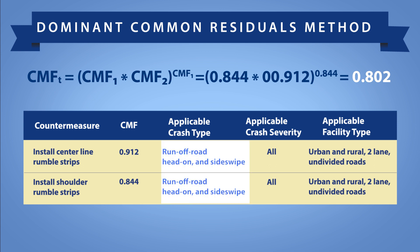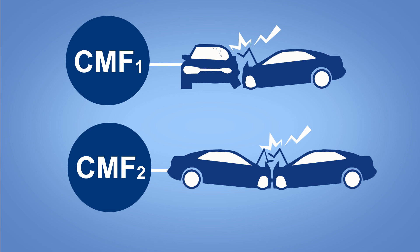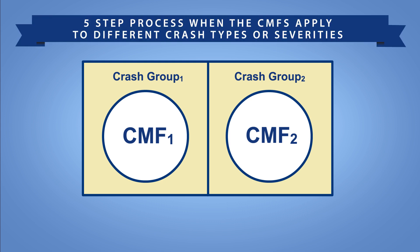The CMF for the combined effect is applicable to run-off-the-road, head-on, and sideswipe crashes on urban and rural two-lane undivided roads, because these were the applicable conditions for both individual CMFs. When the individual CMFs apply to different crash types or severities, it is necessary to apply the CMFs individually to the respective crashes and aggregate the results, rather than combine the CMFs. This figure provides an illustration of two CMFs that apply to different crash types or severities, shown here as crash groups.